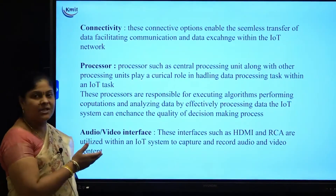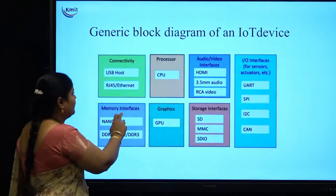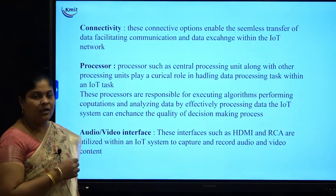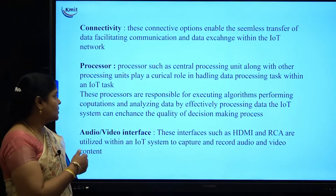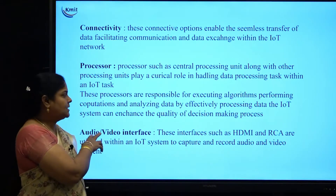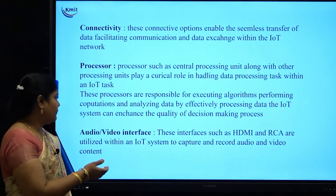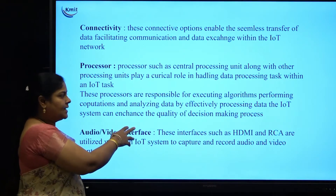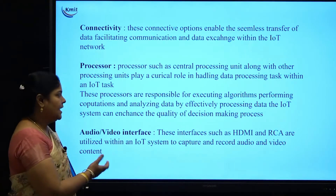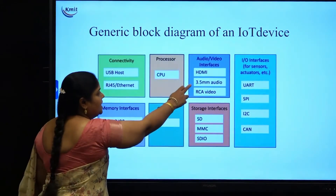The second type of interface is the processor. The processor is the central processing unit, and along with the CPU, other processes also play a crucial role in data processing. These processes are responsible for executing algorithms, checking performance, computation, and analyzing data — all to enhance the decision-making process effectively.